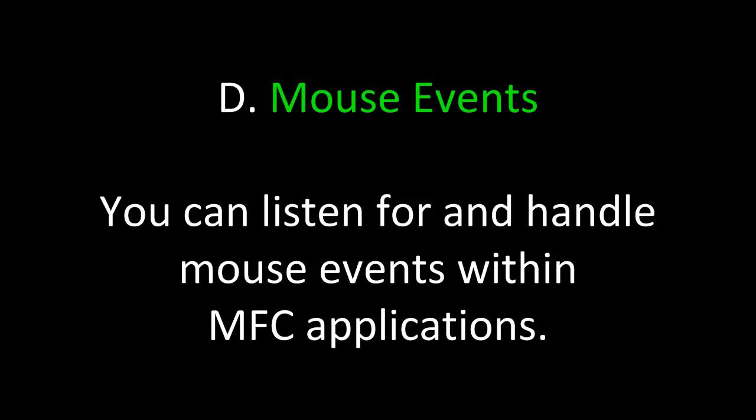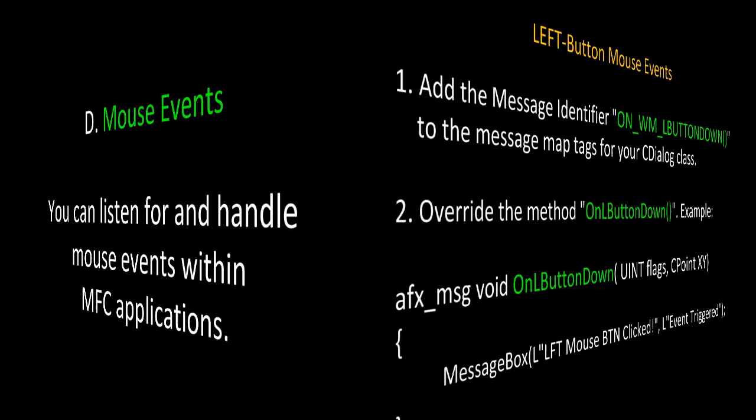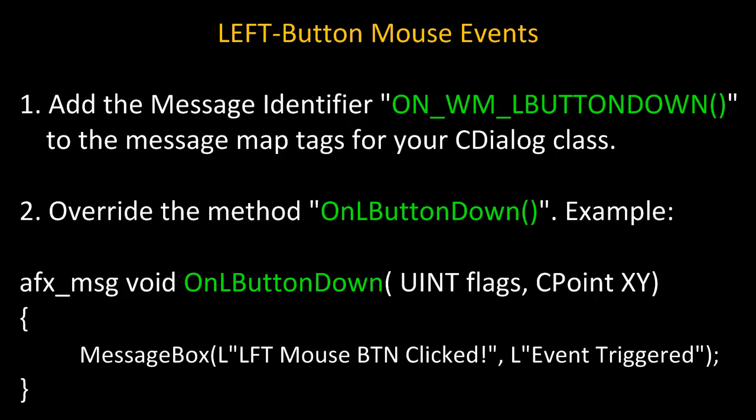Let's take a look at mouse events. You can listen for and handle mouse events within MFC applications. To handle left button mouse events, first add the message identifier ON_WM_LBUTTONDOWN to the message map tags from the CDialog class. Second, override the method OnLButtonDown. Here we have the function definition of OnLButtonDown, and in its implementation we're just firing off a message box when the event is triggered.